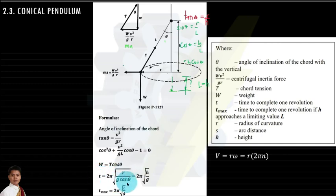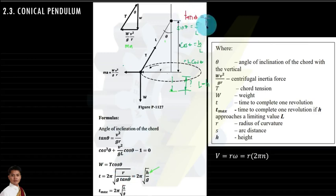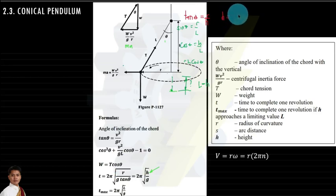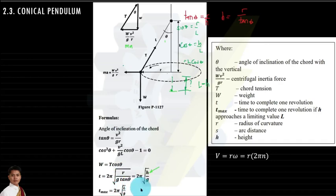Even with just this formula we can solve h in terms of theta and r: h = r / tangent theta. This speeds up calculation when r and theta are given. The maximum time to complete one revolution is: t = 2π·√(l/g).